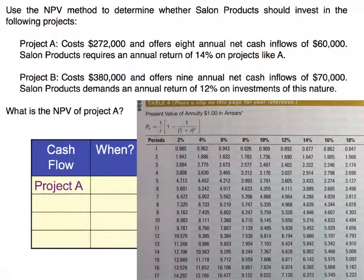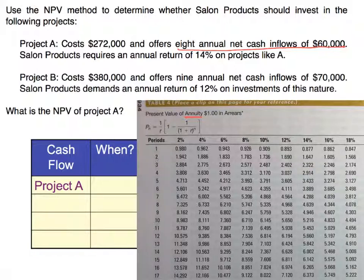This is the present value of an annuity table. The present value of a lump sum table is used when there's just one payment. However, in this case we're getting eight annual net cash inflows of $60,000 — the same payment over and over again for eight years, which is an annuity. We go to line eight on our annuity table, and the return is 14%, so we scroll over to column 14% and find the annuity factor to be 4.639. We'll use this factor in calculating the net present value.